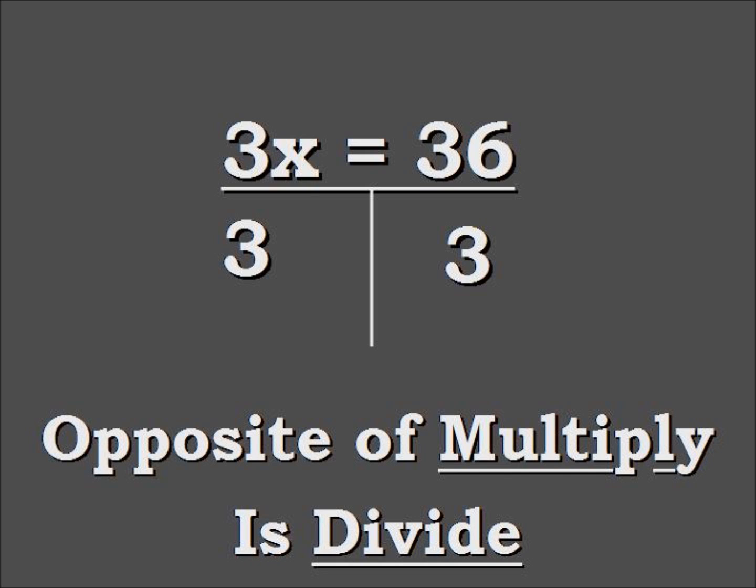We divide from the other side because the equation must be balanced. 3 divided by 3 equals 1. 36 divided by 3 equals 12.